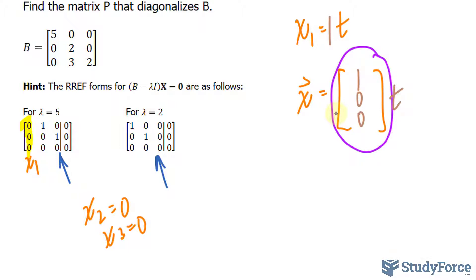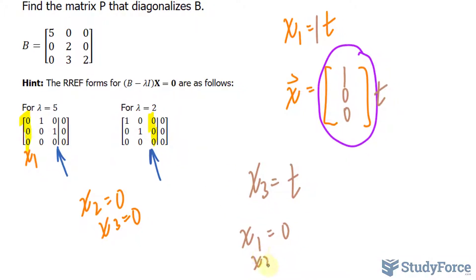For this one, we have this as a column that doesn't have a leading 1. So I'll set x sub 3 is equal to t, and our two equations, that first row will be x sub 1 is equal to 0, and this equation will be x sub 2 is equal to 0.